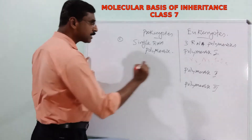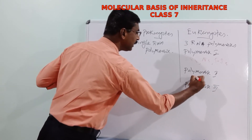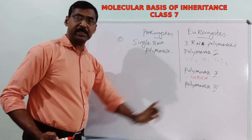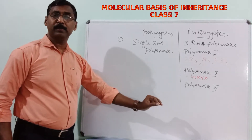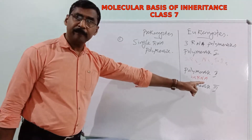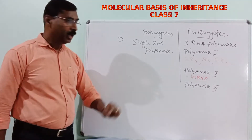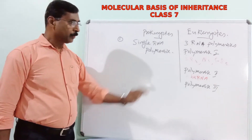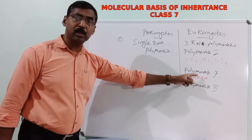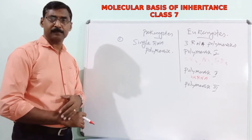Polymerase 2 polymerizes heterogeneous nuclear RNA, or HnRNA. HnRNA is the precursor of mRNA — it is first formed and then undergoes post-transcriptional processing to become mRNA. The first formed RNA is the HnRNA, also called heterogeneous nuclear RNA, which is converted to mRNA after some processing.